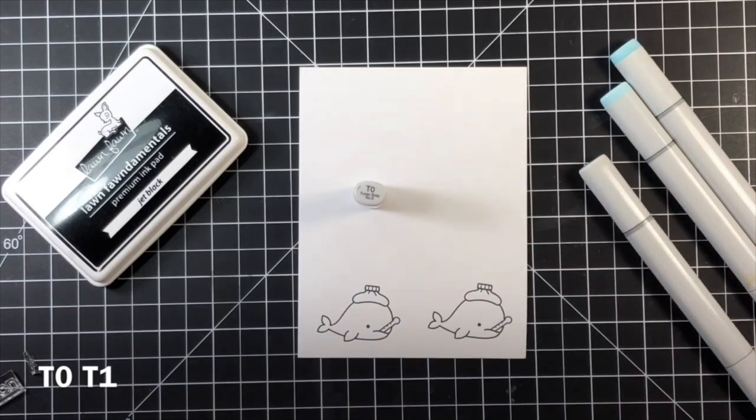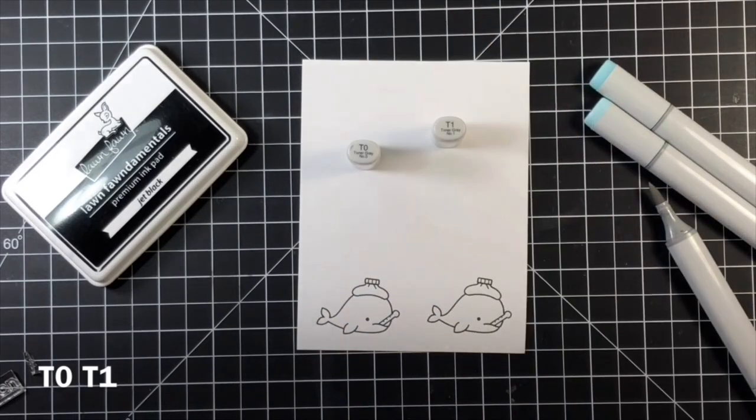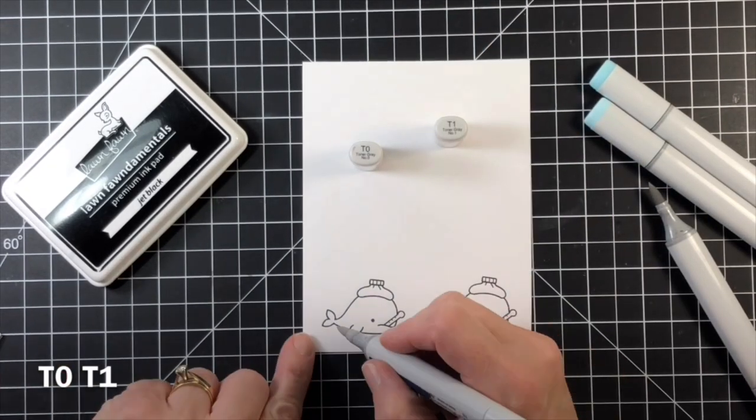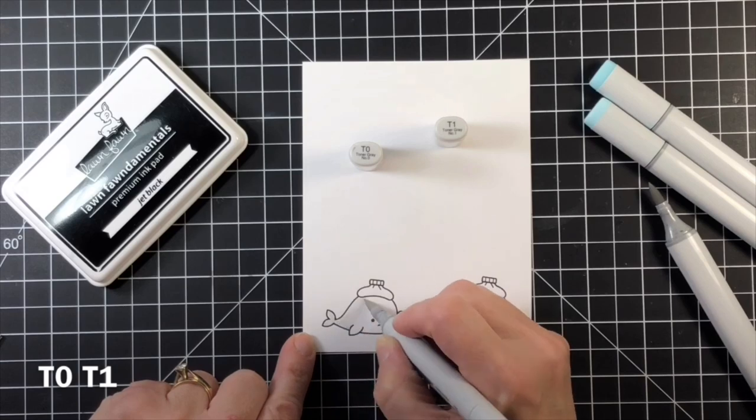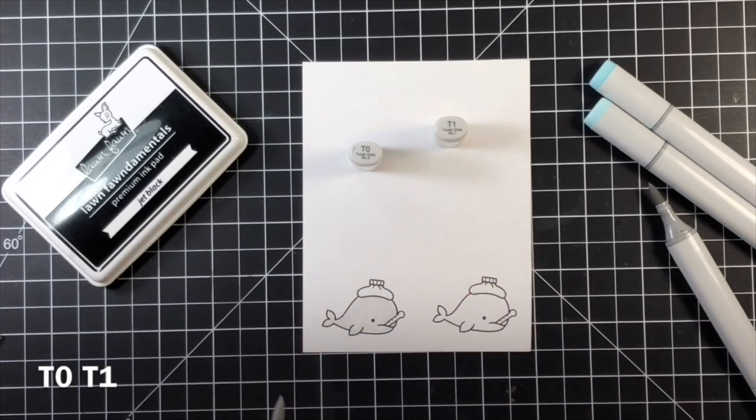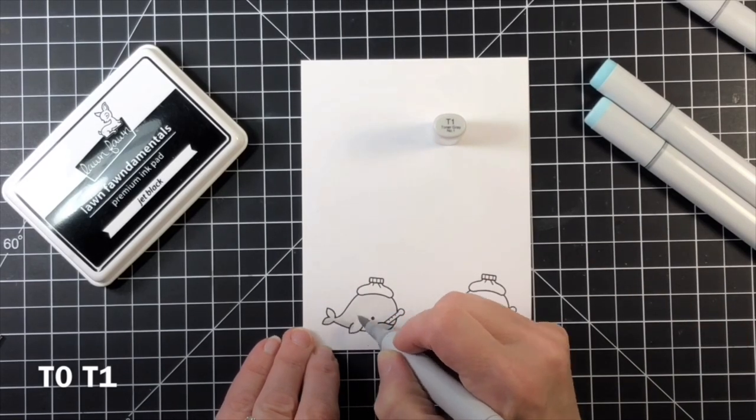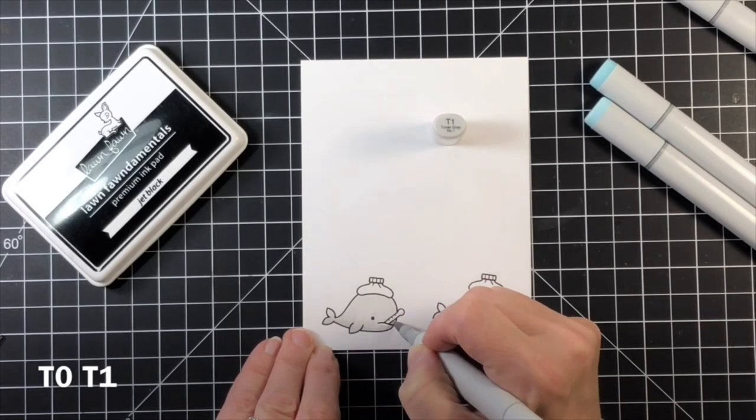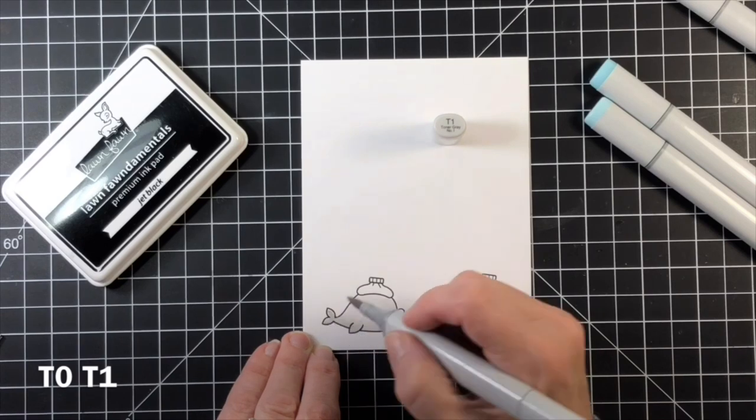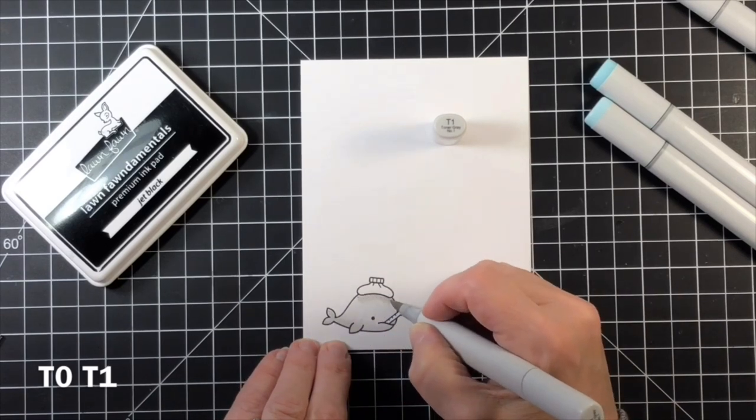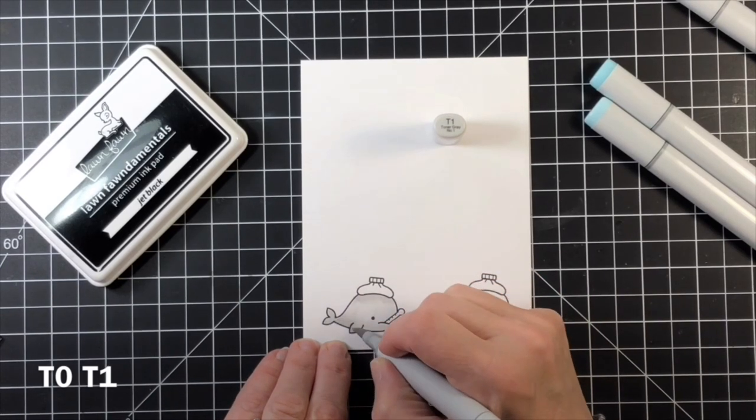The whale is so small I did some very simple coloring, just two shades of gray for the whale's body and two shades of blue for the ice pack on his head. The Copic colors I used are at the bottom of the screen, but I used T0 and T1 for the whale's body and B000 and B00 for the ice pack on top of the whale's head.